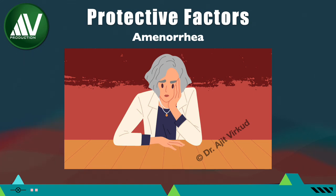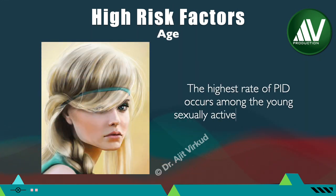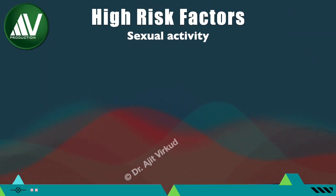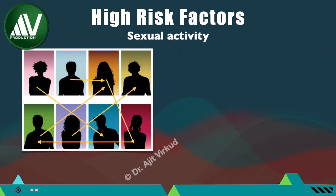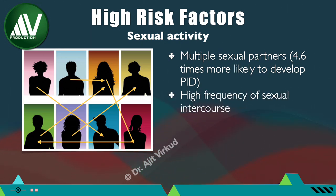Lack of menses — amenorrhoeic and postmenopausal women are less likely to develop pelvic inflammatory disease. The highest rate of PID occurs among young sexually active women, i.e. those between 15–19 years of age. Mechanisms include increased risk-taking behavior, lack of use of protection, increased cervical permeability, larger zone of cervical ectopy, and decreased protective chlamydial antibodies. Factors related to sexual activity that increase PID risk include multiple sexual partners (4.6 times more likely), high frequency of intercourse, young age at first intercourse, and sex during or just after menstruation.